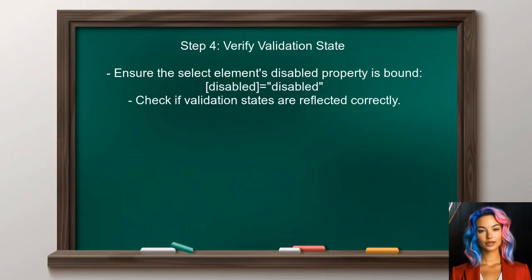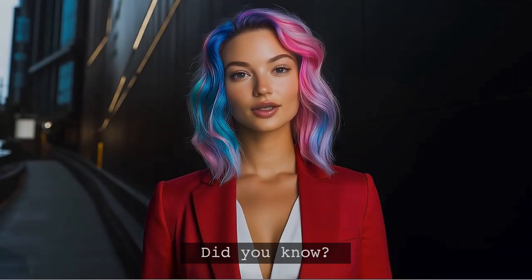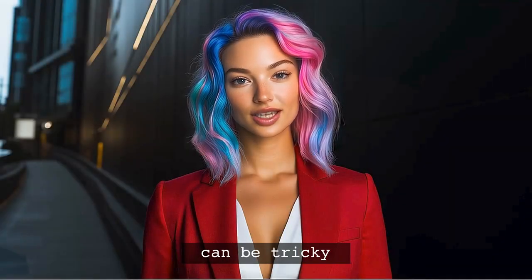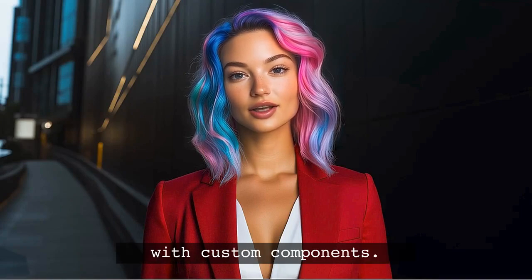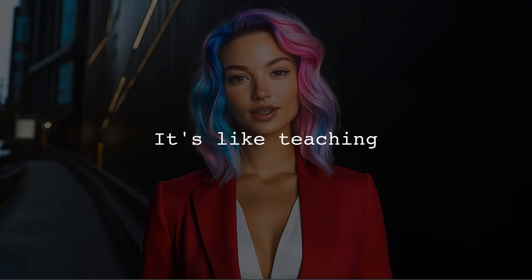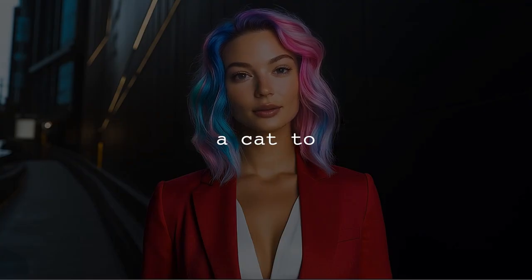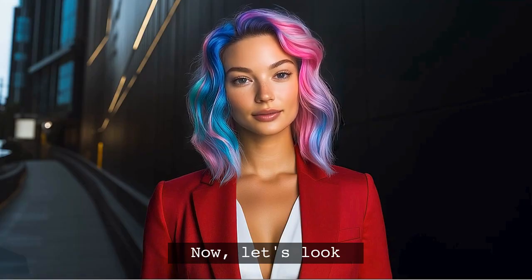Finally, verify that the form control's validation state is correctly reflected in the select element. This can be done by checking the disabled property and ensuring it updates based on the form control's state. Did you know? Angular's reactive forms are designed to handle complex scenarios, but they can be tricky when it comes to custom components — it's like trying to teach a cat to fetch. Possible, but requires patience.